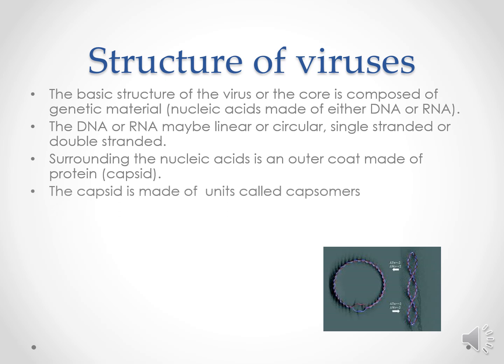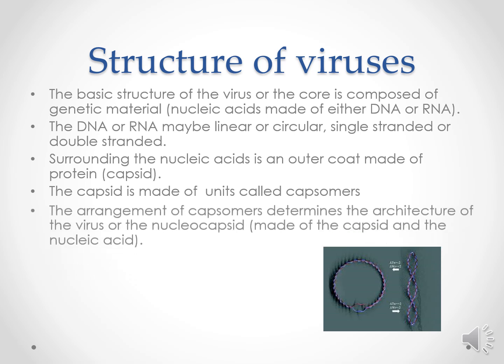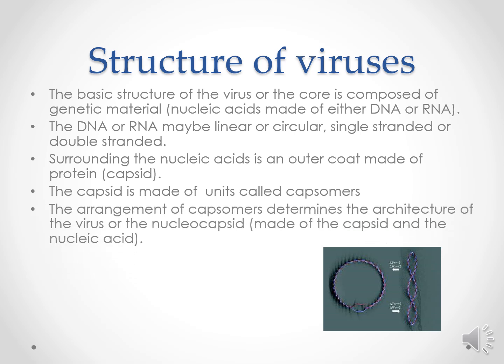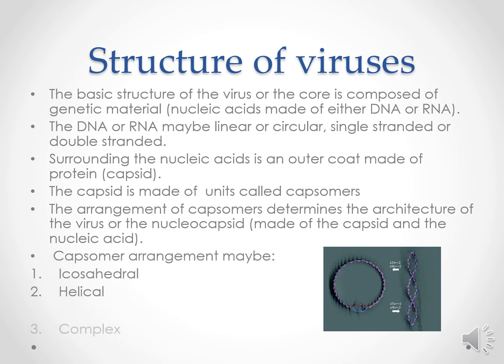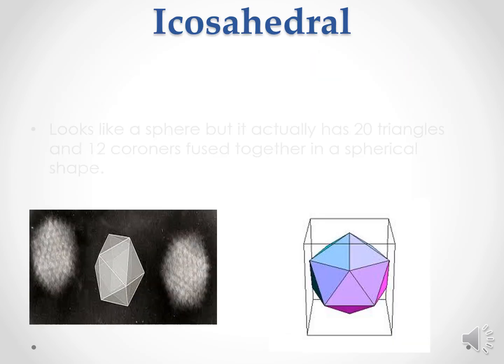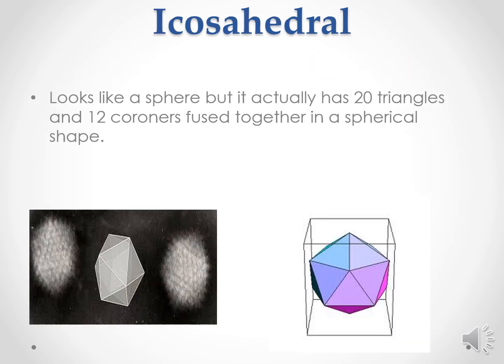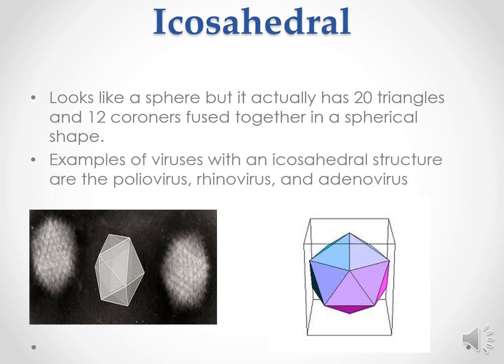The capsid is made up of units called capsomeres. The arrangement of capsomeres determines the architecture of the virus. Capsomere arrangement may be either icosahedral or helical. The icosahedral structure looks like a sphere but actually has 20 triangles and 12 corners fused together to form a spherical structure. Examples of such viruses are poliovirus, rhinovirus, and adenovirus.